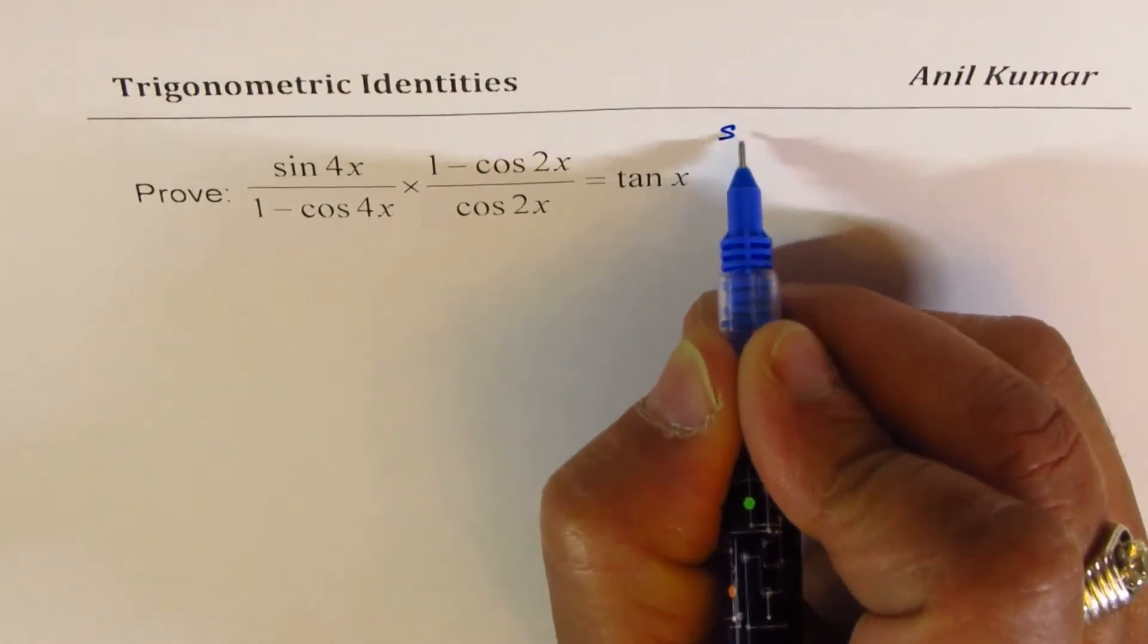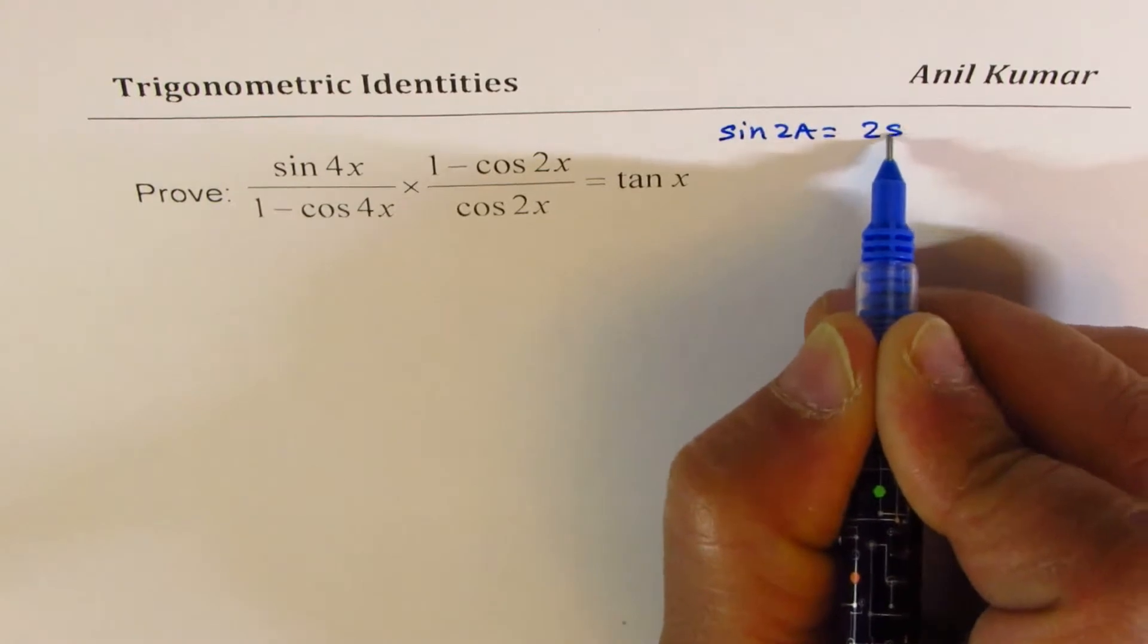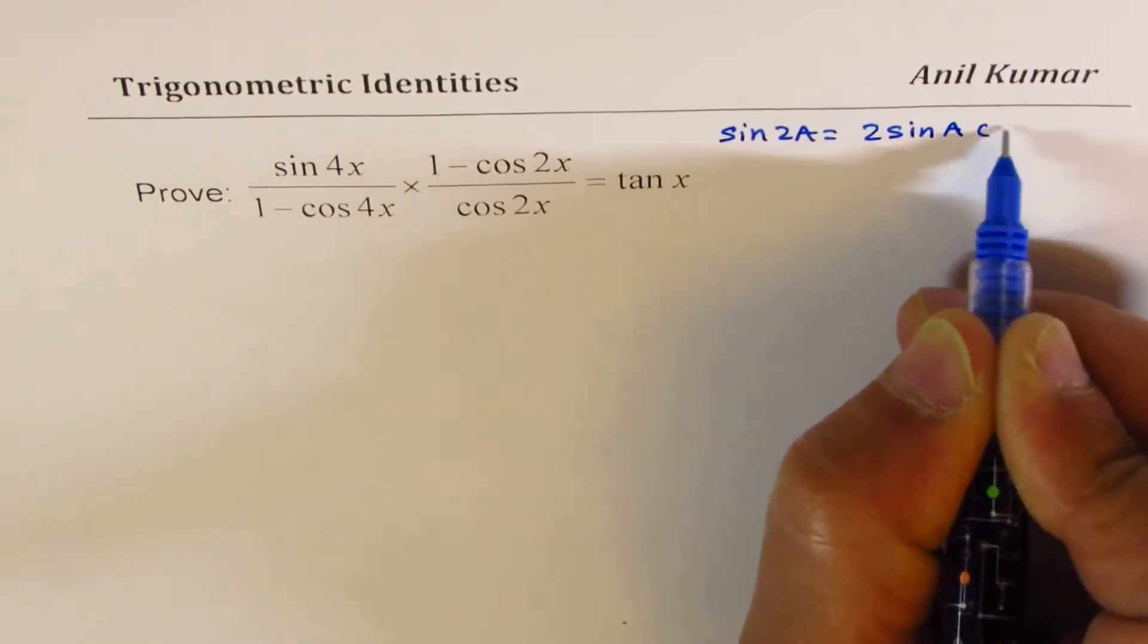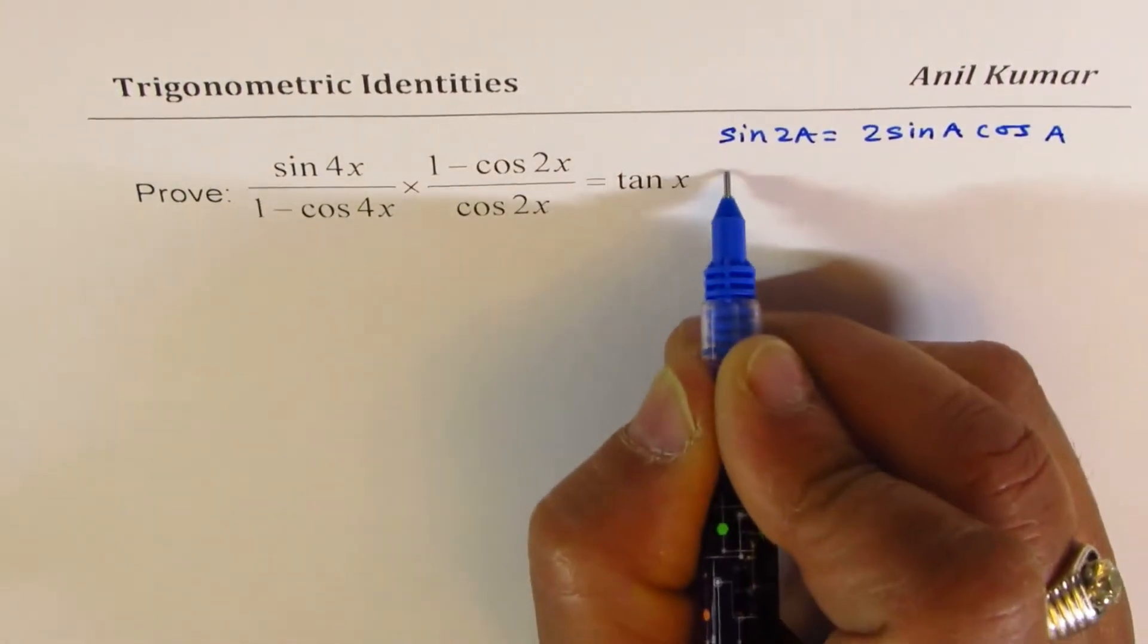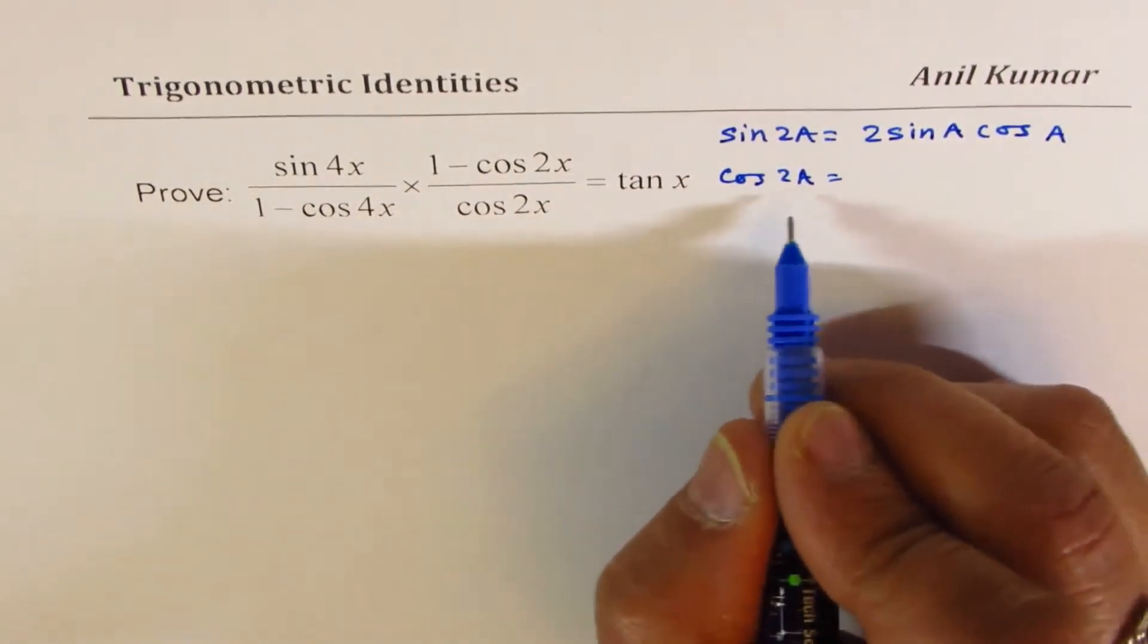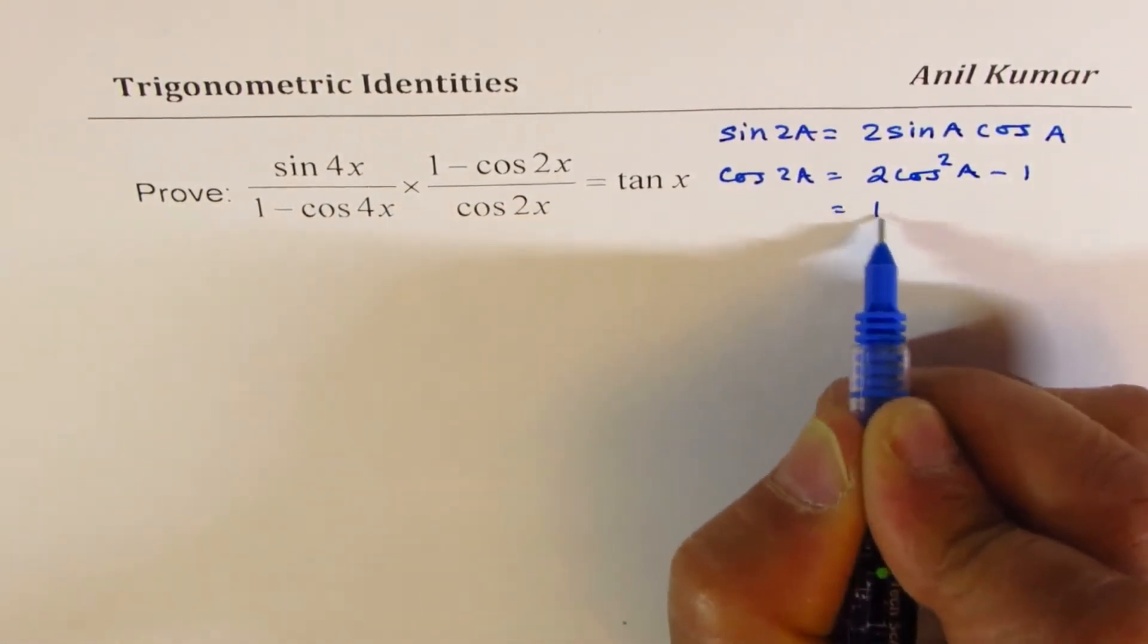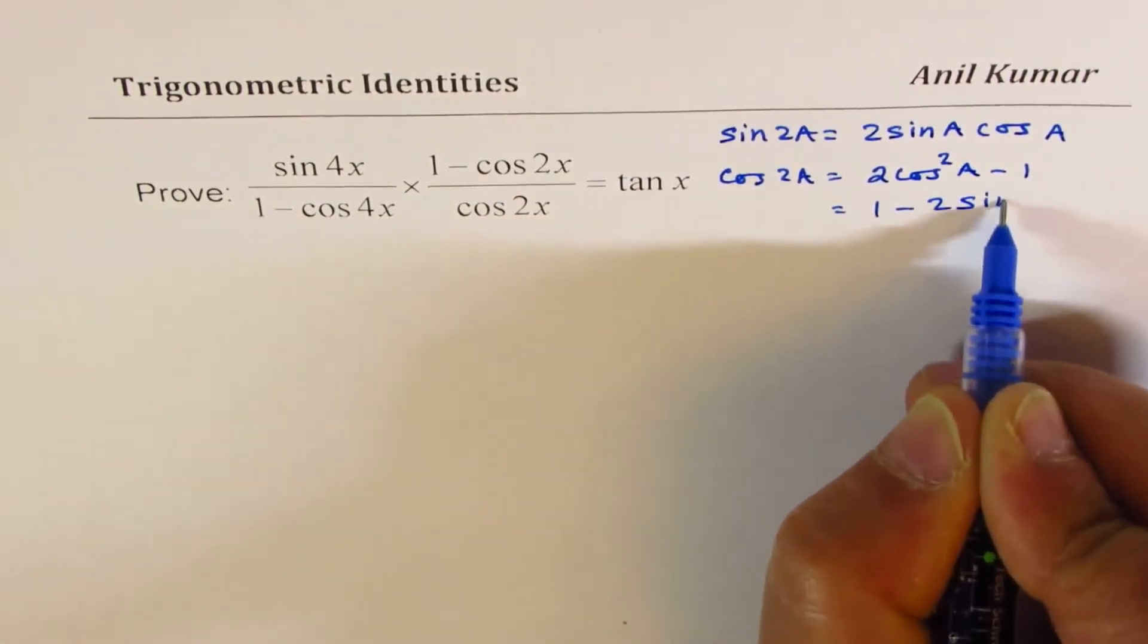We'll use the formulas sine 2a equals 2 sine a cos a, and cos 2a could be written as three formulas here. We could write this as 2 cos square a minus 1, we could also write this as 1 minus 2 sine square a.